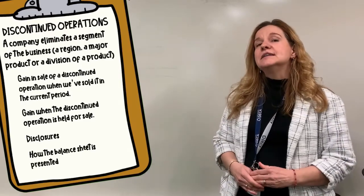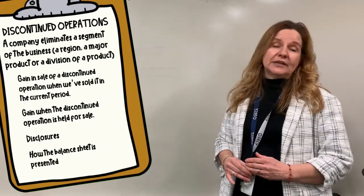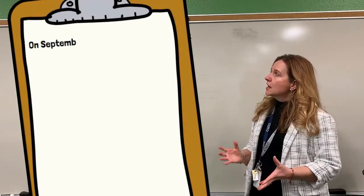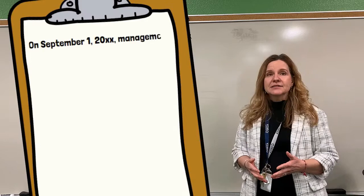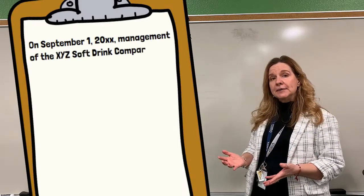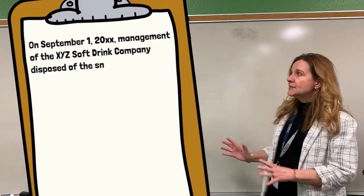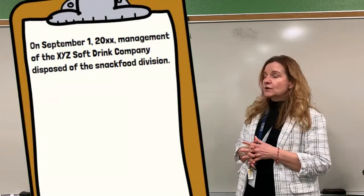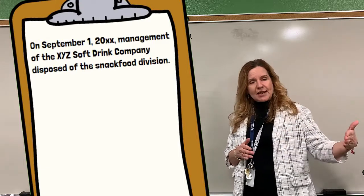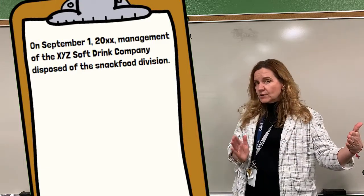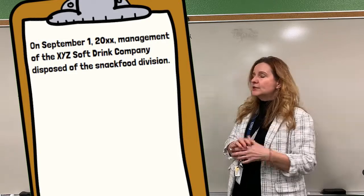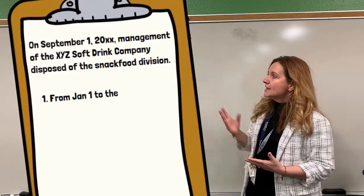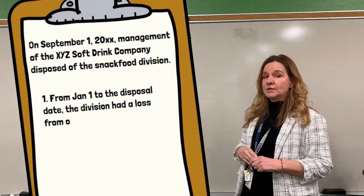Now I'm going to focus on the income statement and look at an example. It's September 1st and management of XYZ Soft Dream Company has decided to eliminate their snack food division. They decided that on January 1st. So we look from January 1st to the date of disposal and examine the profit or loss. In this example, they have an operating loss on the snack food division of $40 million.